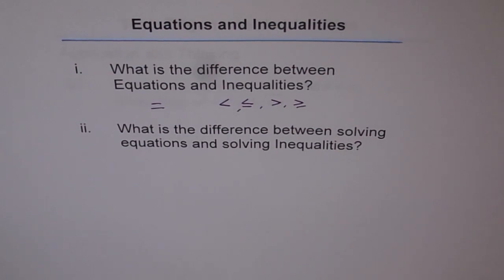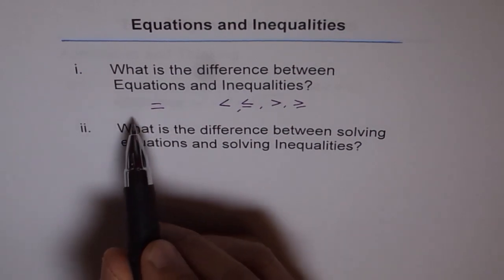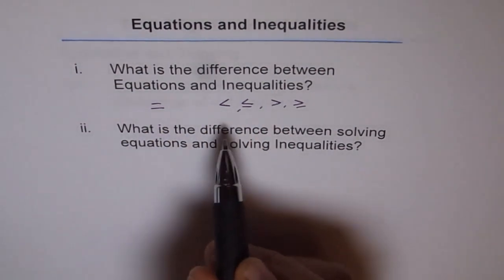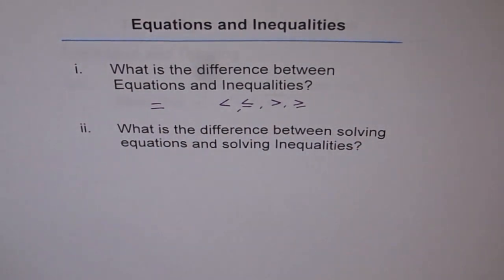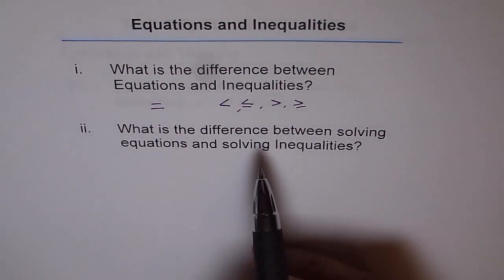The second difference is, when you solve one equation, you get a fixed number of solutions — one or two, a few discrete solutions. For inequalities, what you get is a range of solutions. So for equations we have a limited number of solutions, and for inequalities we have a range of solutions. When we say something is greater than something else, the solutions are within a range — from here to here it is greater than.